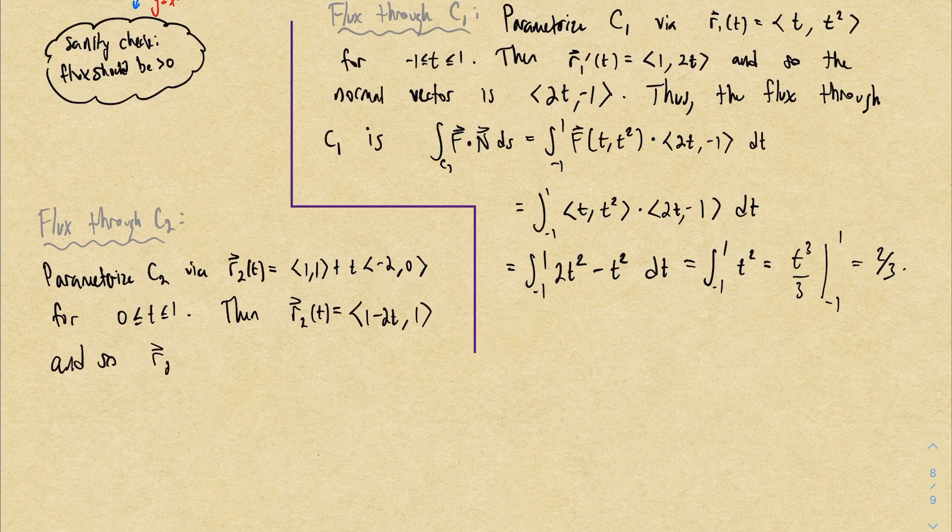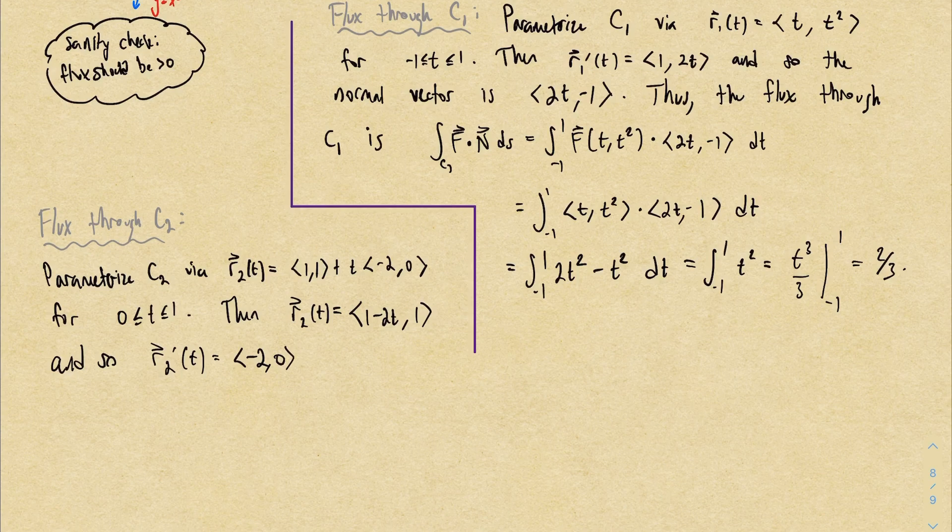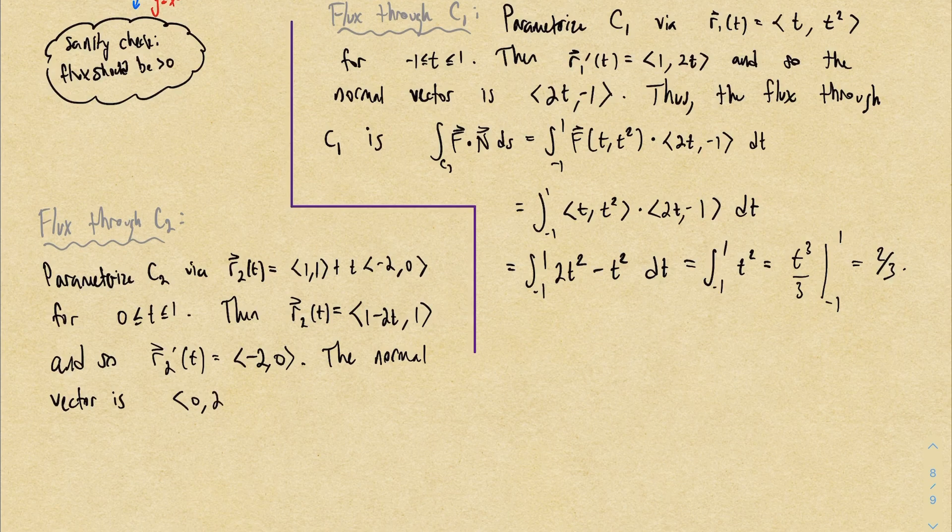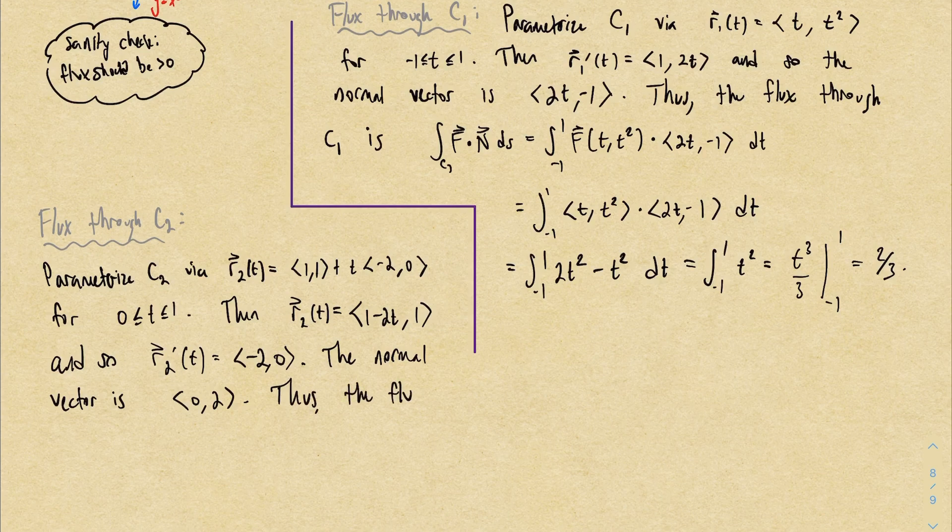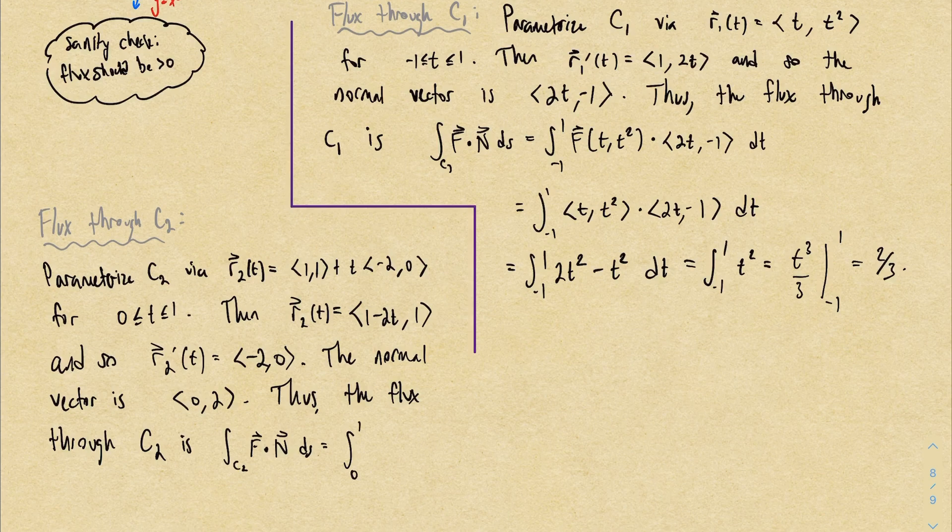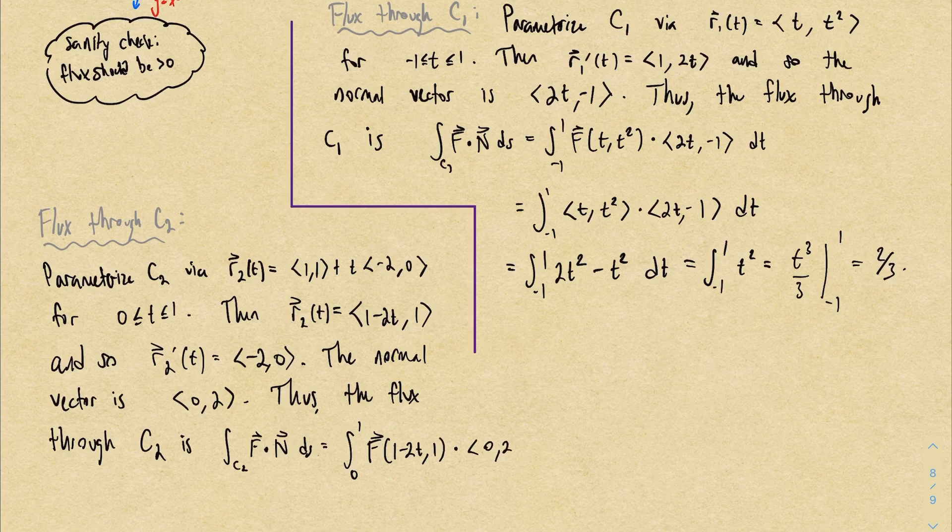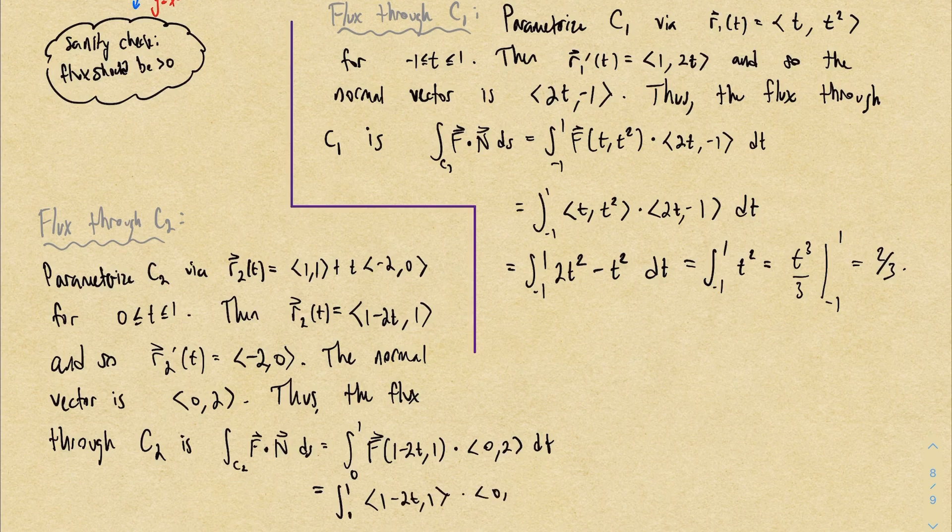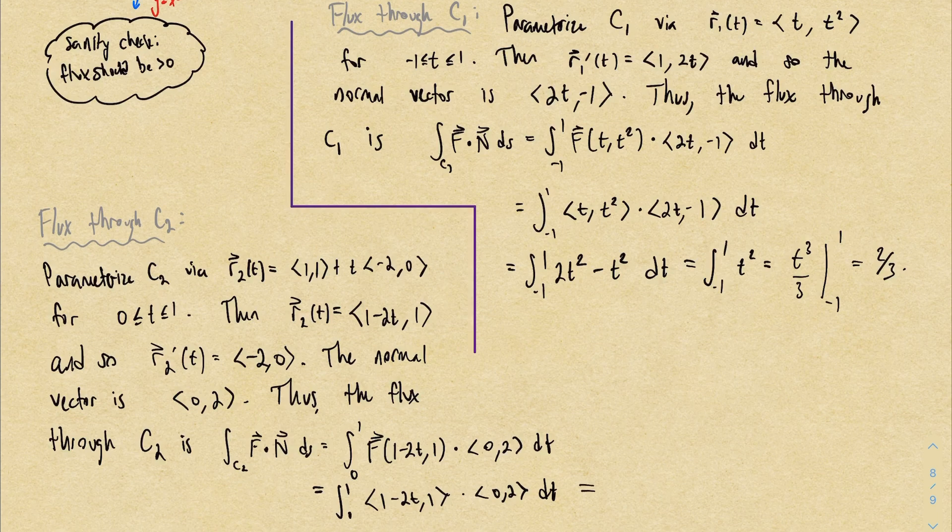And I do exactly what I did before. r₂' is the vector (-2, 0). So to get the normal vector, I reverse the order of the components. And then I multiply the new second component by a negative sign to get the vector (0, 2). And now we're ready to compute. The flux through C₂ is going to be the integral from 0 to 1 that comes from our parameter bounds. f of the parameterization dot the normal vector. Again, f is just (x, y). So this spits out the vector (1-2t, 1). I dot that with (0, 2). And I just get 2 times 1, which is 2. And then integrating that from 0 to 1 is super easy. We get 2.